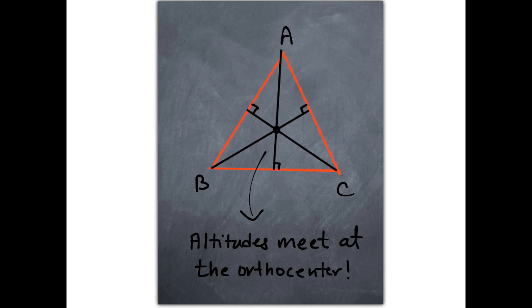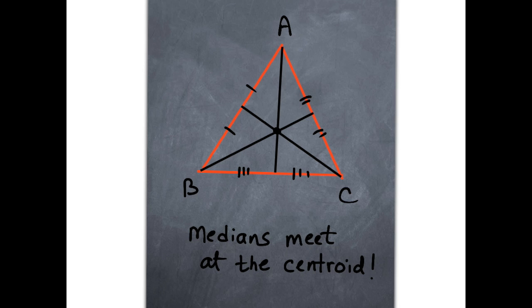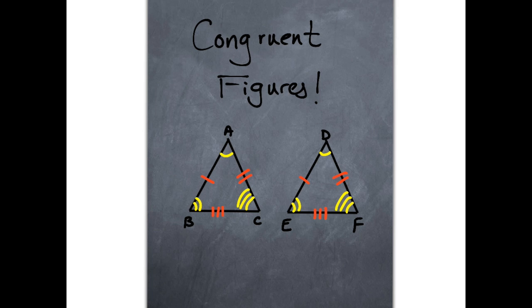The orthocenter is the place where all three altitudes meet. Altitudes are like streets that meet at 90 degrees. Medians are my other favorite, they can be adjacent. They'll take you on a ride from the vertex to the midpoint of the opposite side.